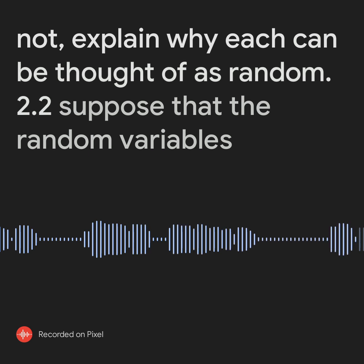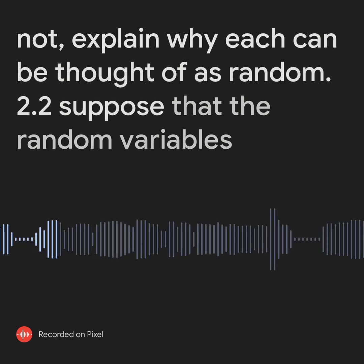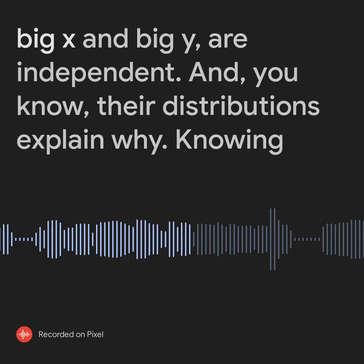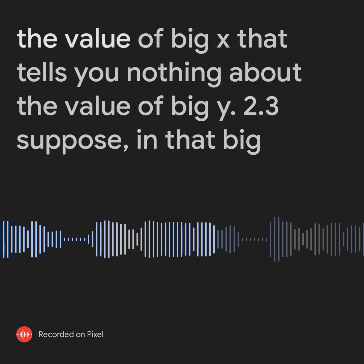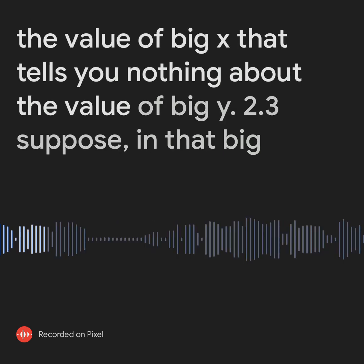2.2. Suppose that the random variables X and Y are independent, and you know their distributions. Explain why knowing the value of X tells you nothing about the value of Y.